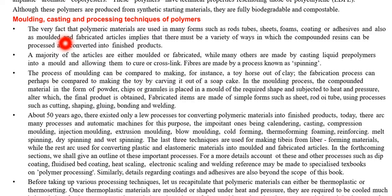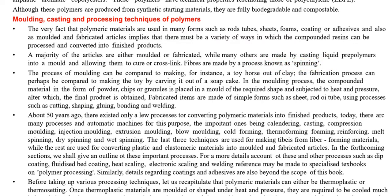Certain processing techniques are applied to convert polymeric materials into finished products. The majority of articles are either molded or fabricated, while many others are made by casting liquid polymers into a mold and allowing them to cure or cross-link. Fibers are made by a process known as spinning — dry spinning, wet spinning, and melt spinning — which we have already discussed.